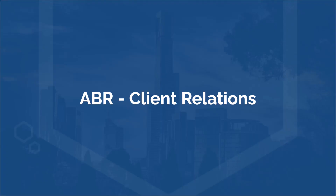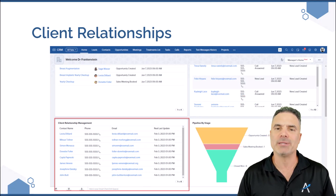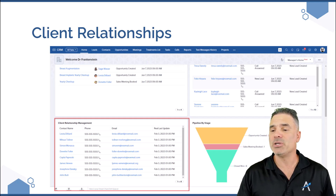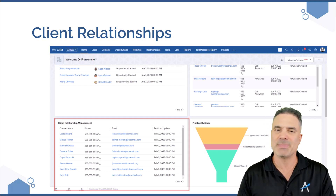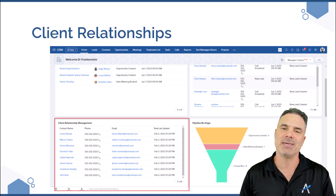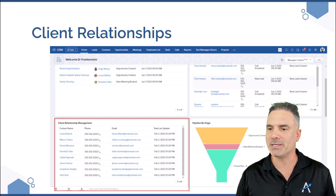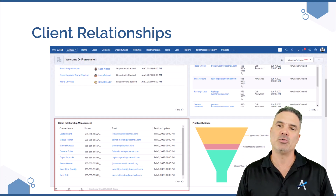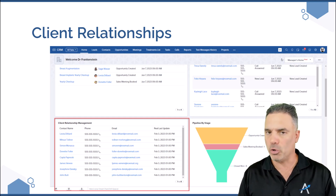The ABR client relations is another AI that makes sure you are always keeping in contact with your clients, so account managers can maintain relationships. Whenever you call people from this list, or send a text message, WhatsApp message, schedule a meeting, or send an email, those people will automatically be removed from the list. This list is always supposed to be empty, meaning you are doing a great job and connecting with your clients and prospects all the time.